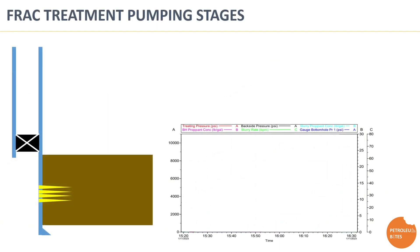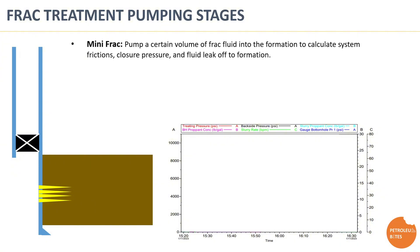Next, let's illustrate the main stages of a frack pumping schedule. The process generally involves several key phases. The first is the mini frack, also known as the data frack. In this stage, a certain volume of frack fluid is pumped into the formation before the main treatment, in order to calibrate the main treatment design and to obtain key information like system friction pressure loss, formation closure pressure, and fluid leak-off behavior into the formation.